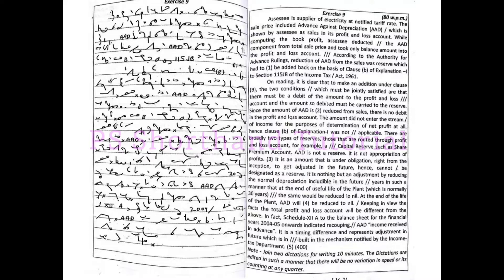The AAD had to be added back on the basis of clause of Explanation 1 to Section 115JB of the Income Tax Act, 1961.